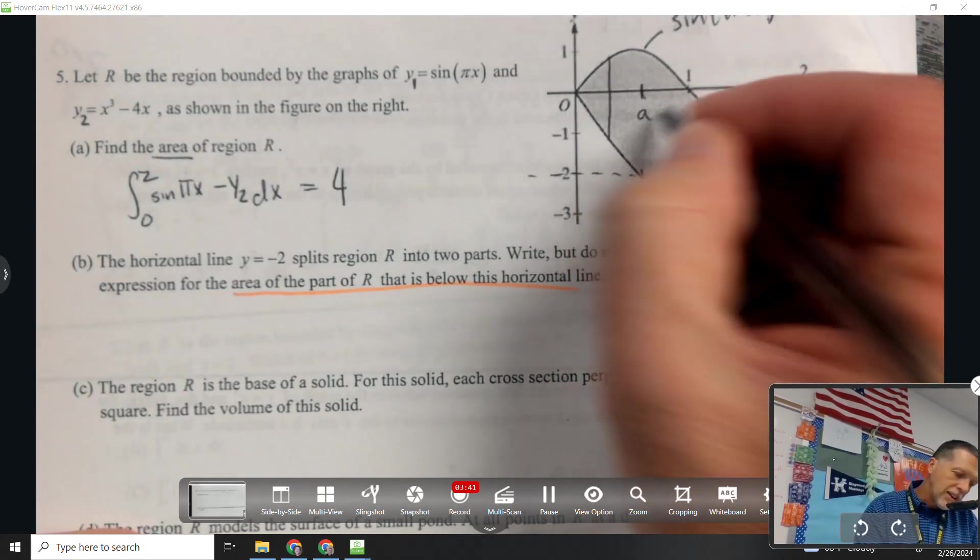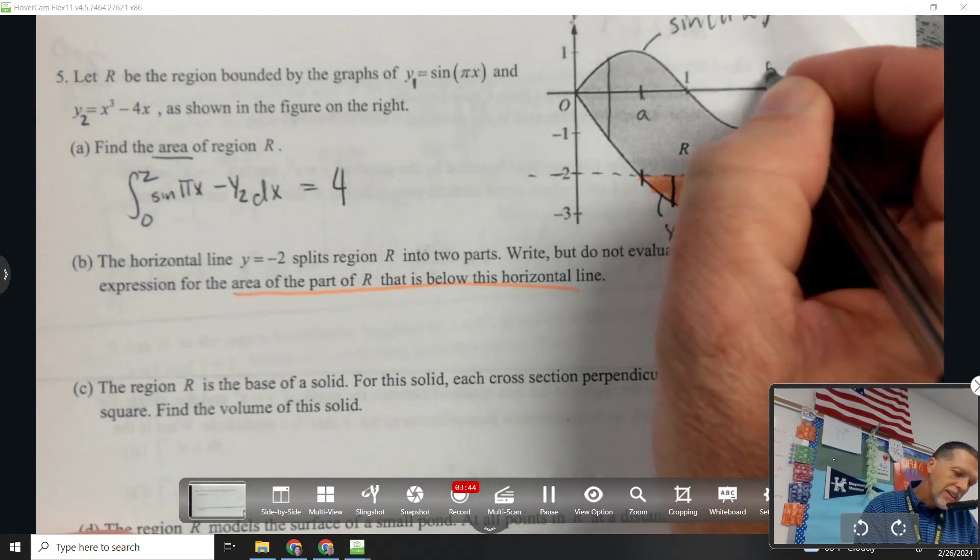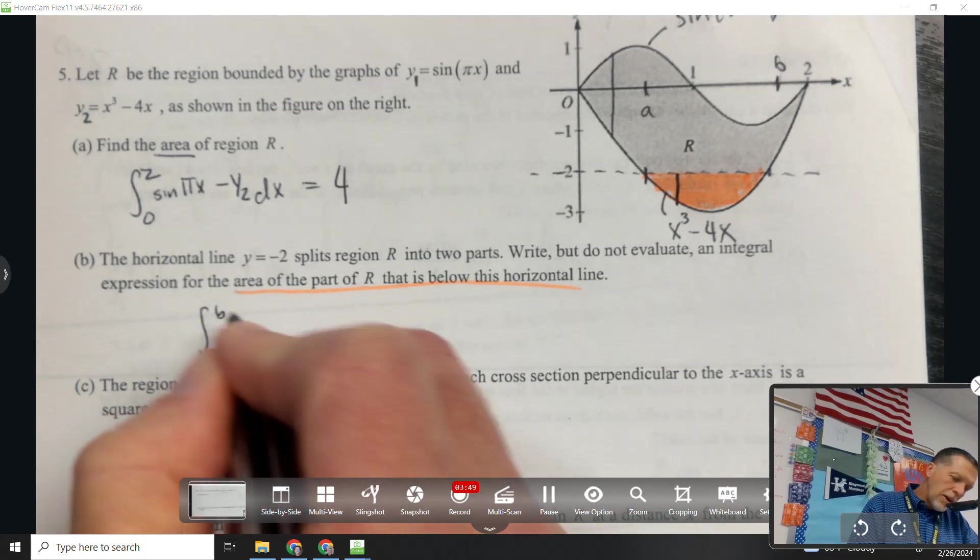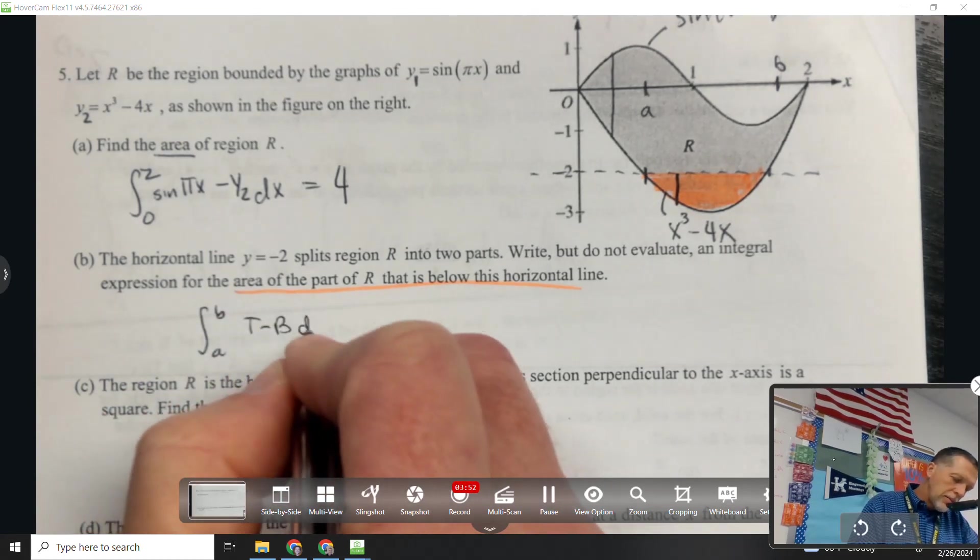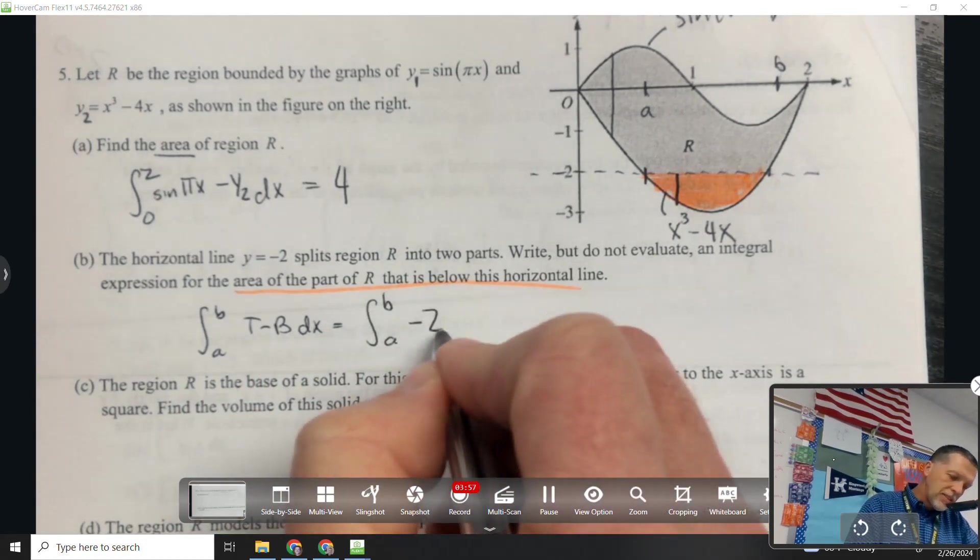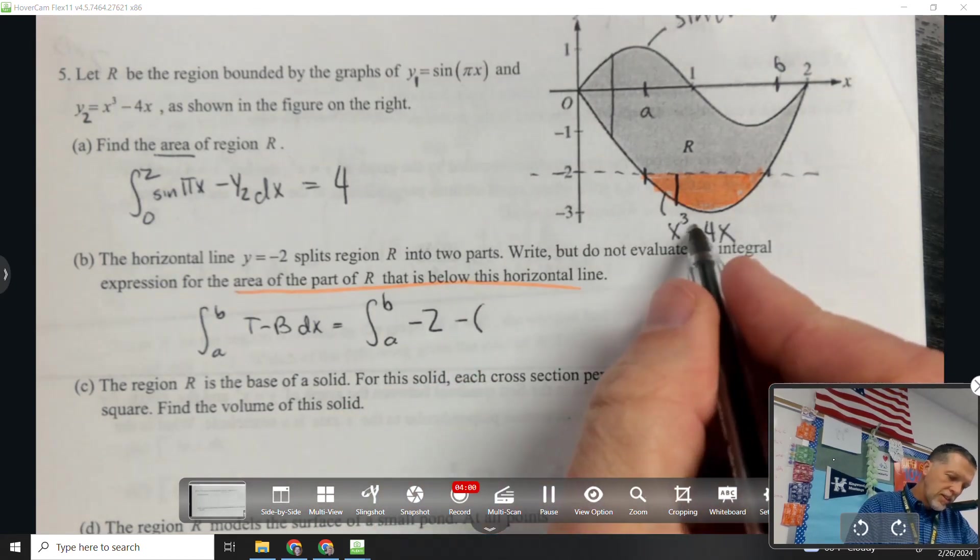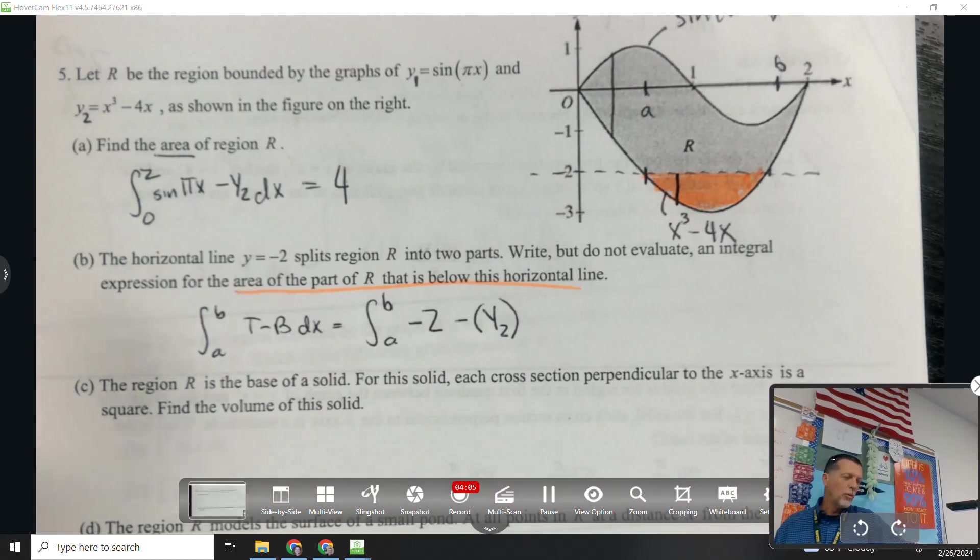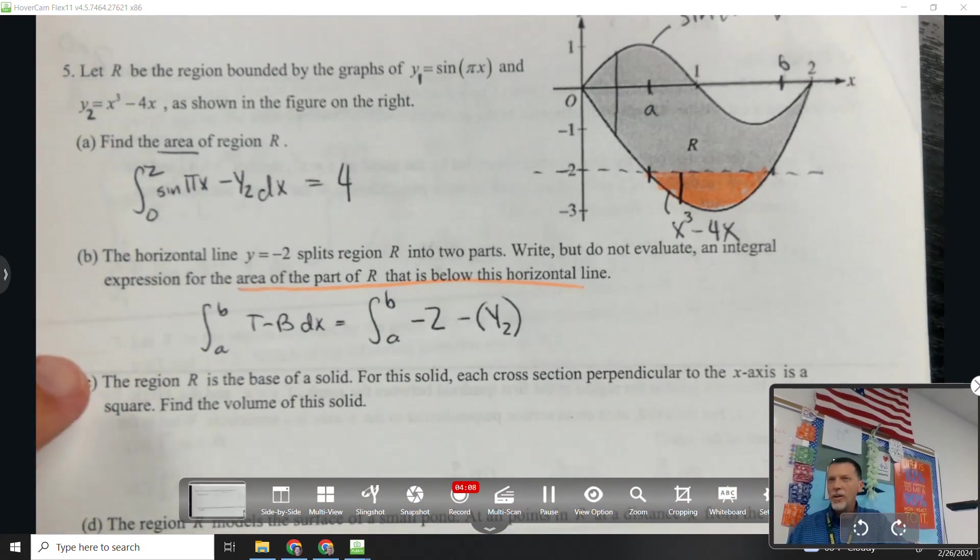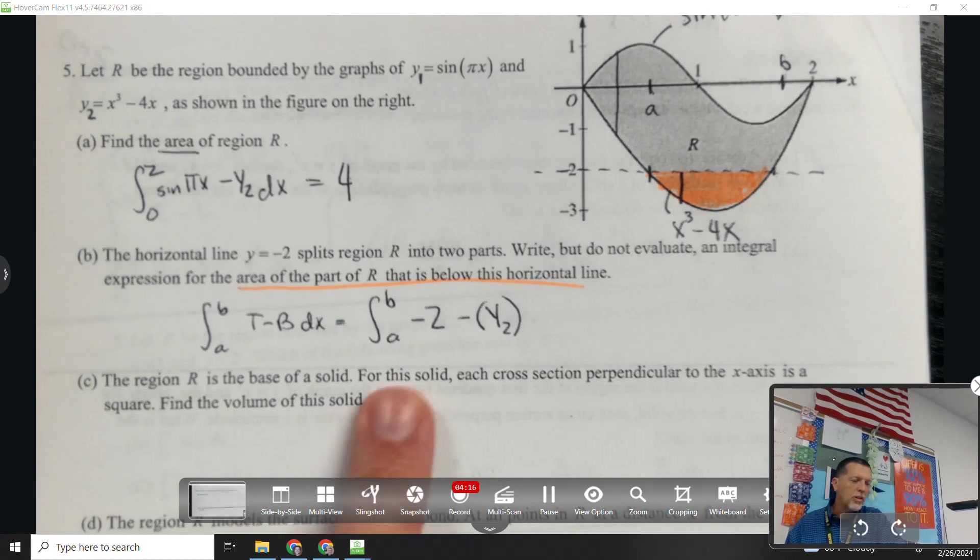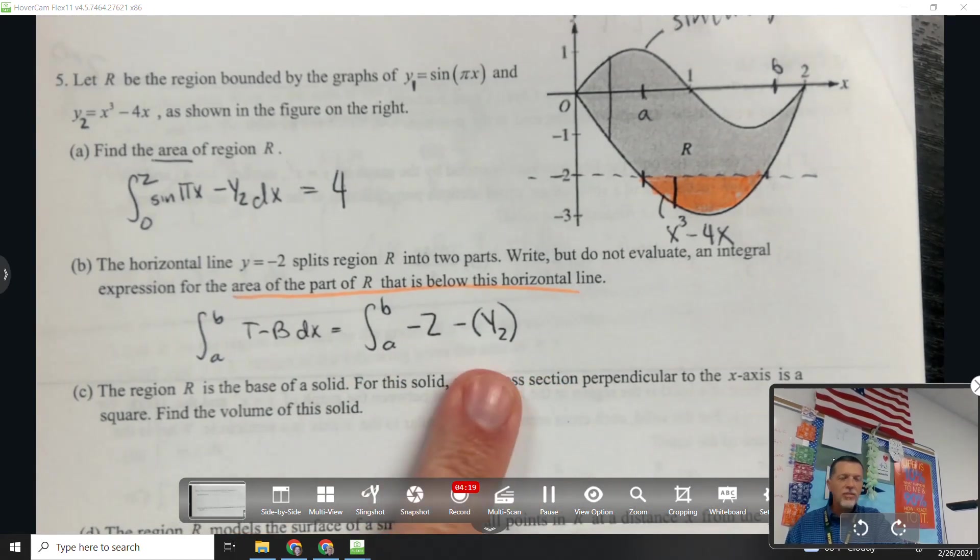From wherever that is, to wherever that is. So I need to figure out a and b. So the integral from a to b, top minus bottom dx. I'll figure out a and b in a minute. The top is minus 2, and the bottom is, I'm just going to call it y2. I can do that because I've labeled what y2 is. So I can introduce new variables into a problem as long as I tell the grader what that variable means. So I'm good to use a's and b's and y2's as long as I've said what those are.